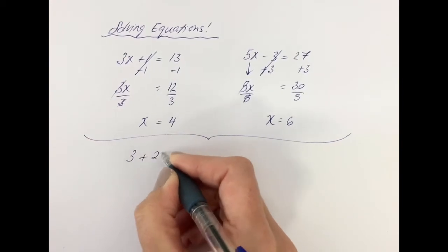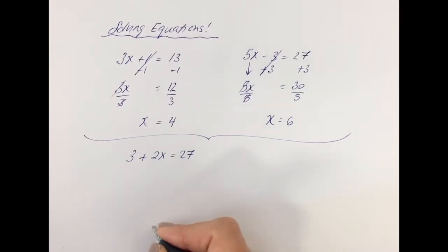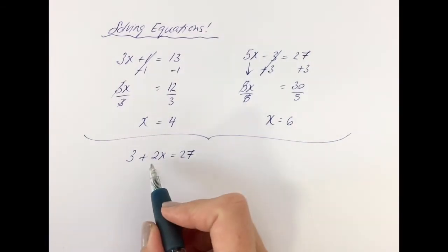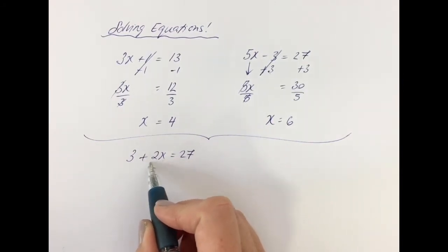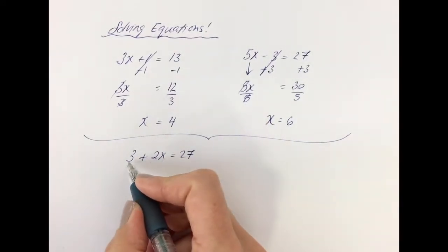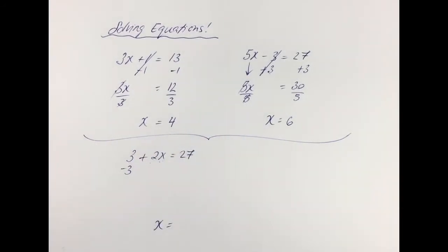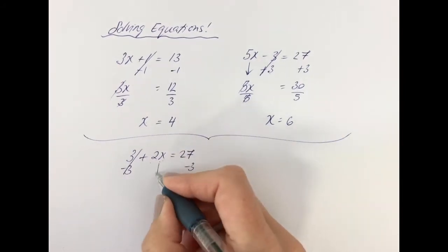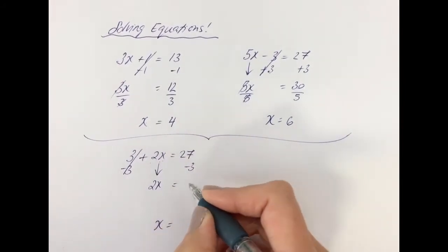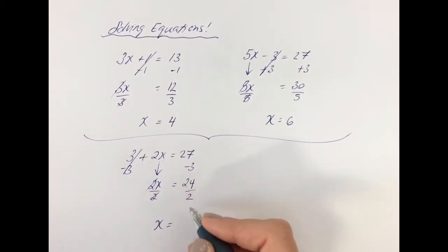Let's say you have 3 plus 2x equals 27. Don't get thrown because it's written in a slightly different way — the order has changed around. We're still going to do the same thing: get the x on its own. We've got to get rid of the 3 that's being added and the 2 that is attached — in other words, it's being multiplied. We always leave anything multiplied or attached till the very end. So take away 3 from the left-hand side, and take away 3 from the right-hand side. That leaves you with 2x equals 24. Now divide both sides by 2, and x equals 12.